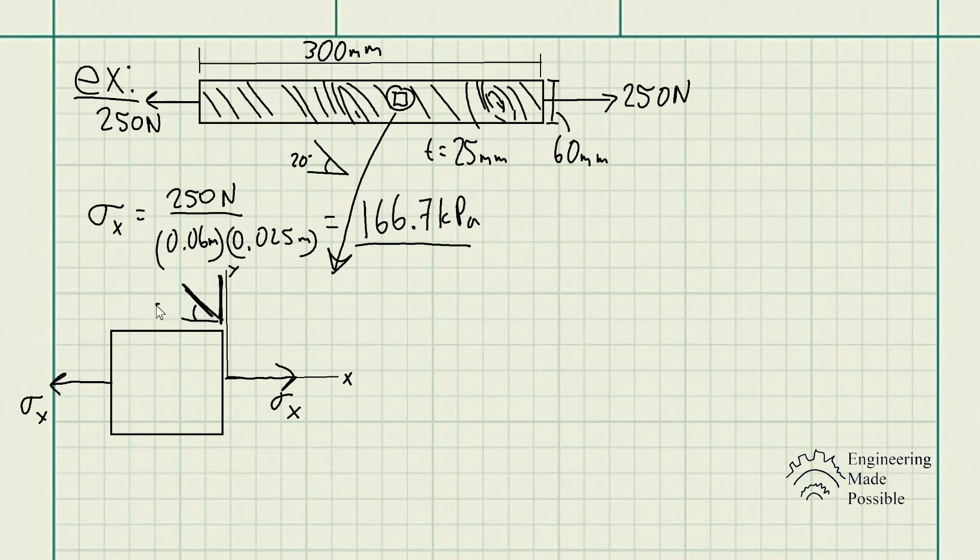Now let's rotate it such that the edge of the element will align to the wood grain. The wood grain is 20 degrees from the horizontal, so we're going to be rotating it 70 degrees. Here is now the new rotated element with our x prime axis as well as our y prime axis.